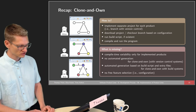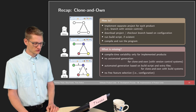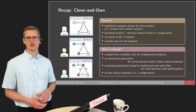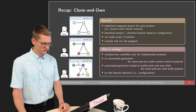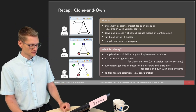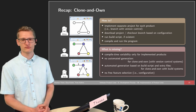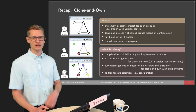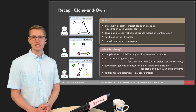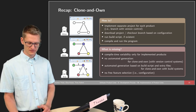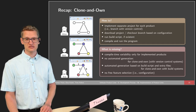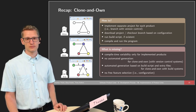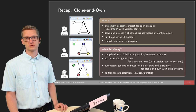There is an effort in application engineering for every single product because we need to clone and adapt each one. There is no automated generation for clone and own with version control systems. There is some limited automated generation when using build systems in combination with clone and own — some extra files can be generated — but this is very limited and especially we have no free feature selection. All build systems can do is incorporate, remove, or replace some files, but we cannot freely select features.